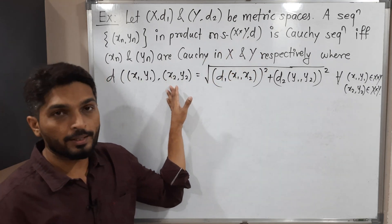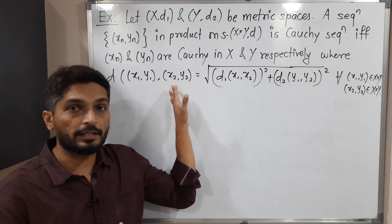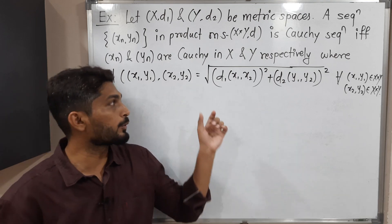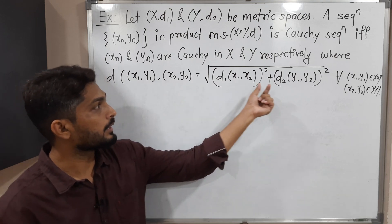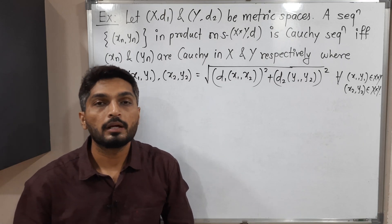So d is defined in this way — it is defined with the help of metrics d1 and d2 as the square root of d1 squared plus d2 squared.